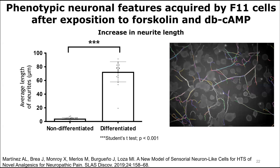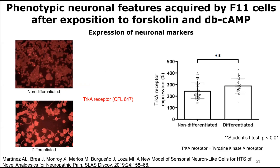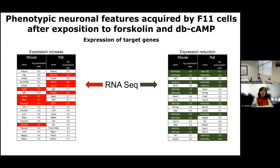We quantified the average length of neurites before and after differentiation, confirming that differentiation induced a high increase in neurite length. We also confirmed that differentiation induced an increase in the expression of TRKA receptor as a neuronal marker. We performed a transcriptomic analysis to see which genes are increased and reduced after differentiation.